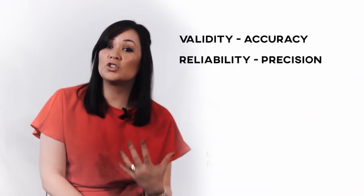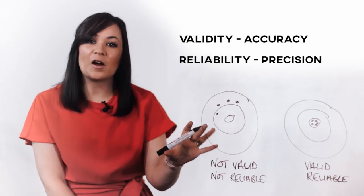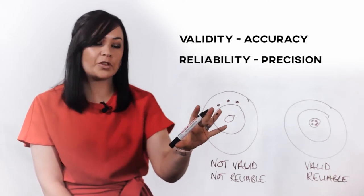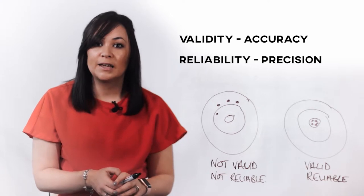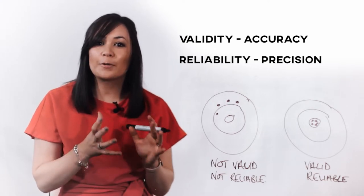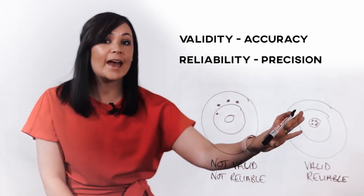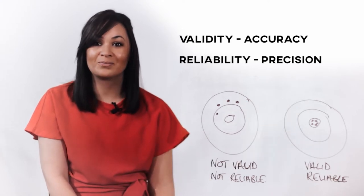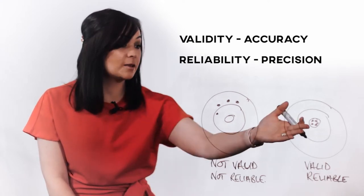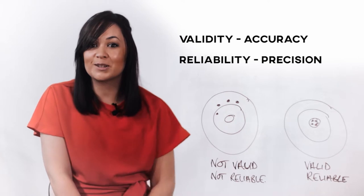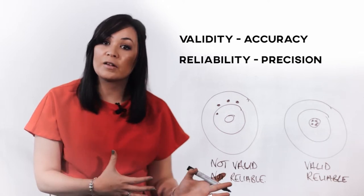Now, you should be able to deduce the remaining two cases. This is an example of a non-valid, non-reliable survey. The marks are clustering around a different spot, not the bullseye, making the survey not valid. They're also far apart from each other, making it lack precision as in the previous case. It's therefore not reliable. Finally, this is a case of a valid, reliable survey. All responses are close to each other, making this survey precise. They're also hitting the bullseye, meaning that we are indeed measuring customer satisfaction.